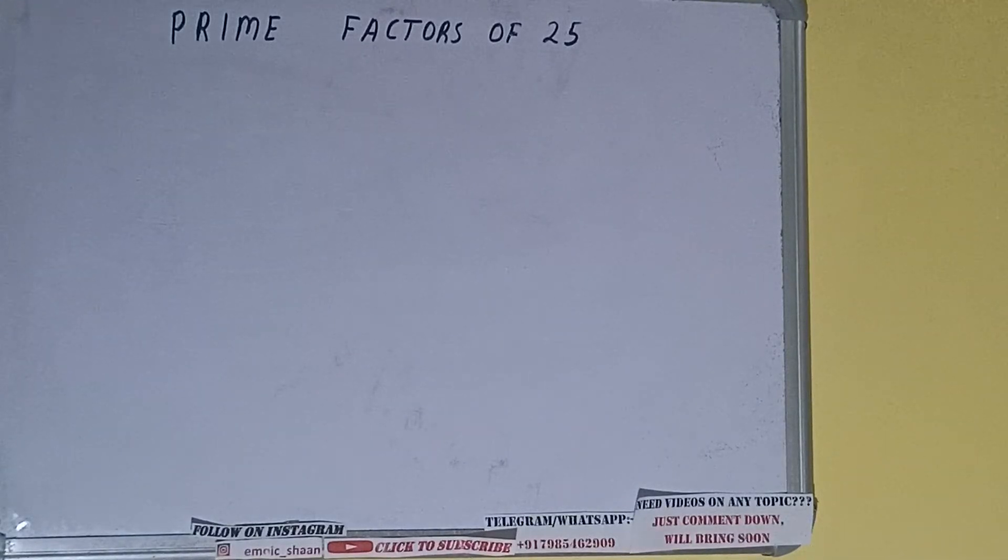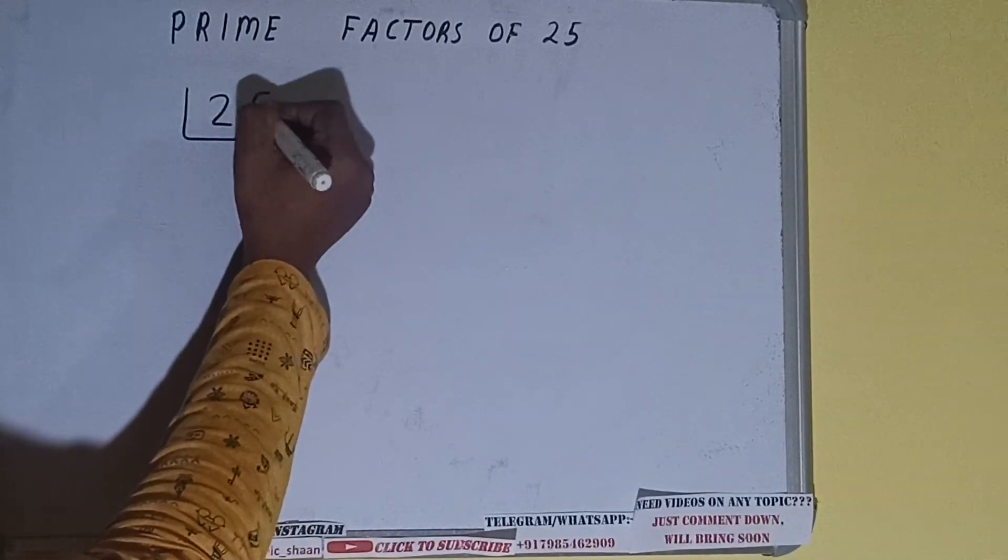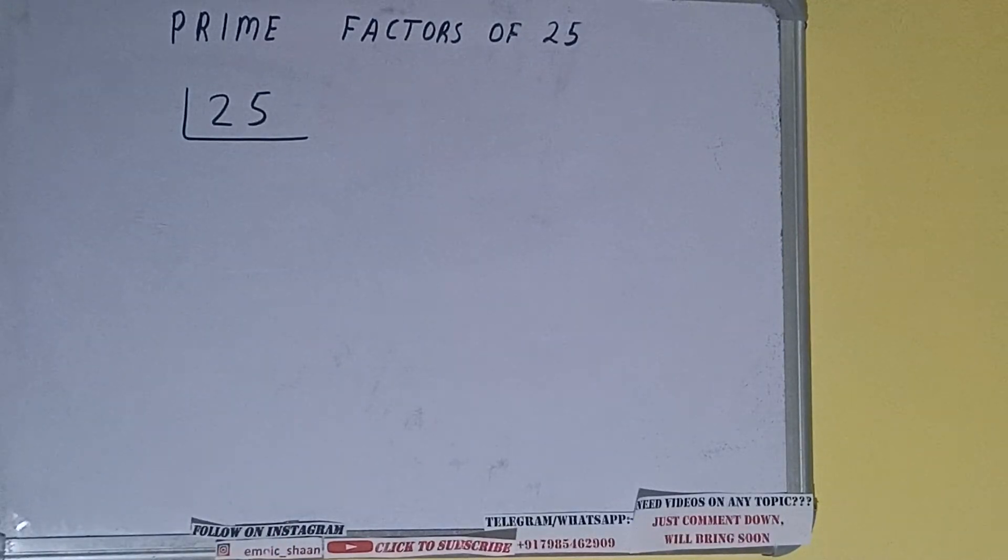Hello friends, and in this video I'll be helping you with the prime factors of the number 25. So let's start. First of all, we need to write the number like this. The next thing we need to know about is what are prime numbers. So prime numbers are numbers that are divisible by one and the number itself, like two, three, five, seven, and so on.